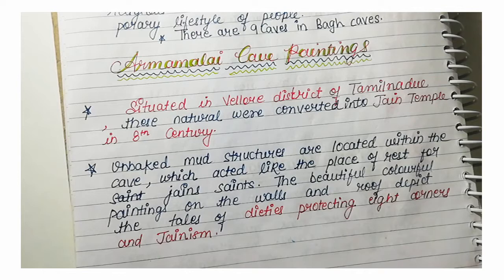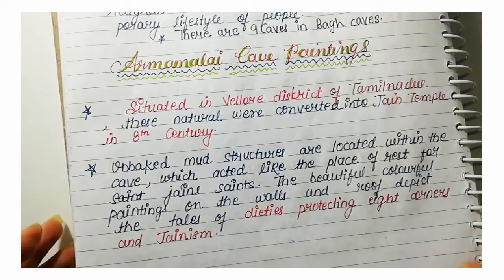The beautiful, colorful paintings on the walls and roof depict tales of deities protecting the 8 corners in Jainism — including Agni, Indra, and other directional deities. These paintings show the divine protection of the Jain faith.